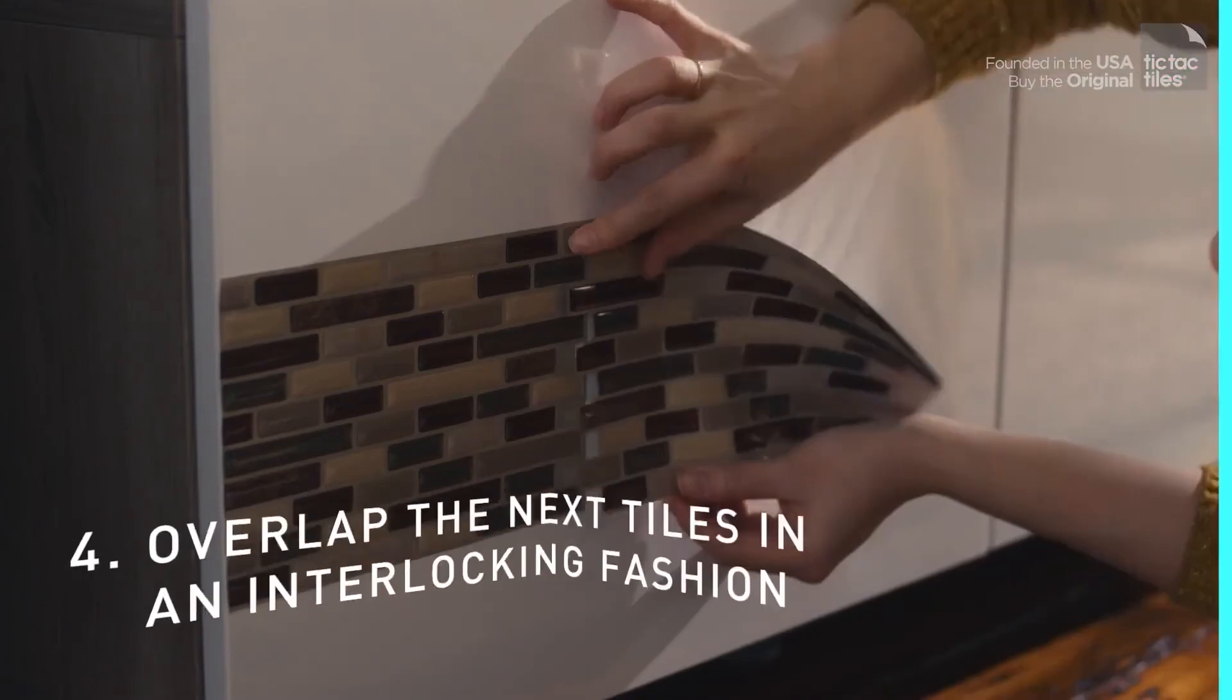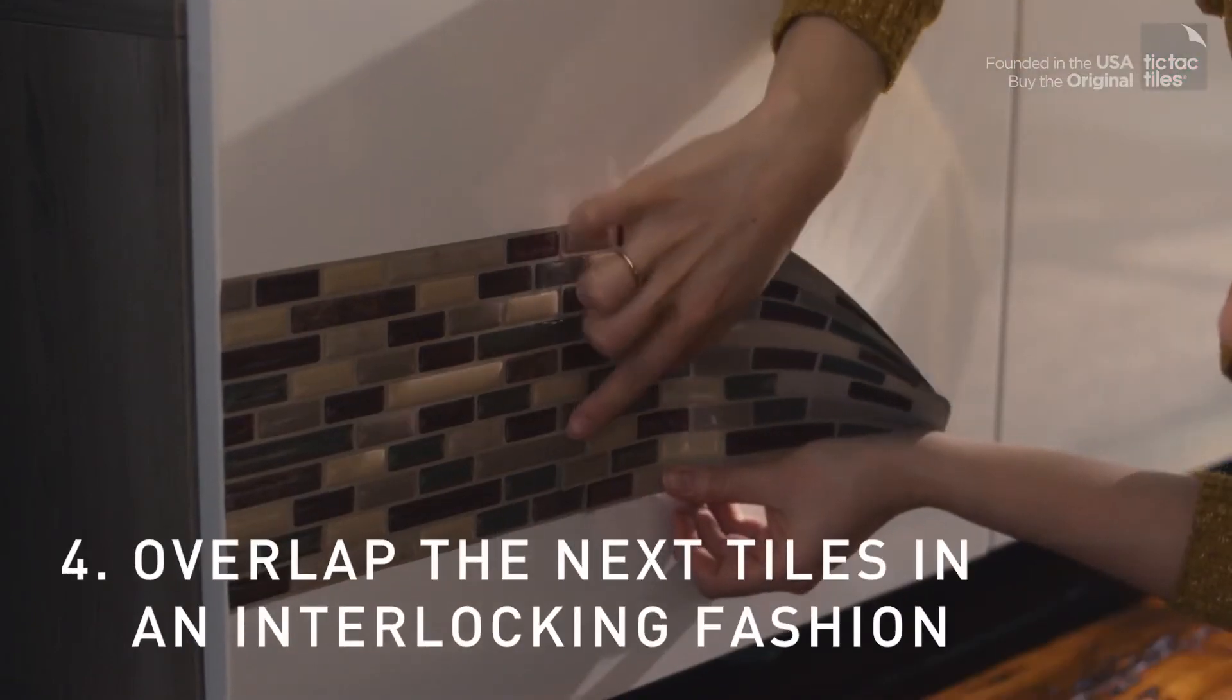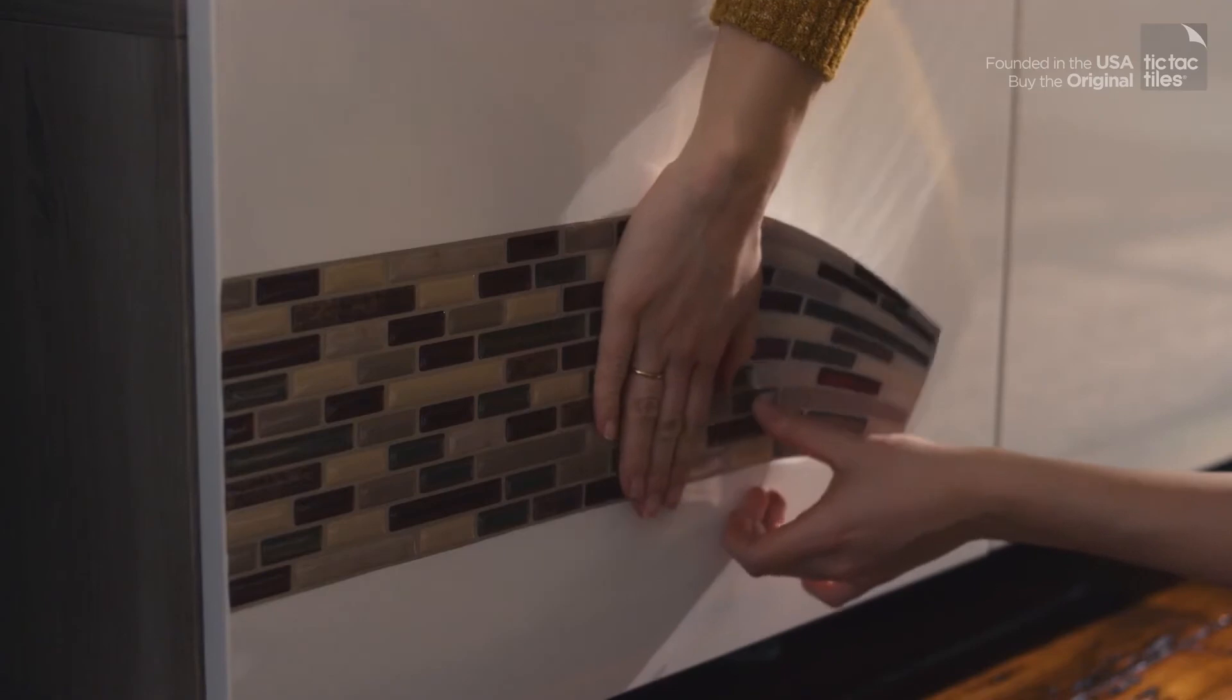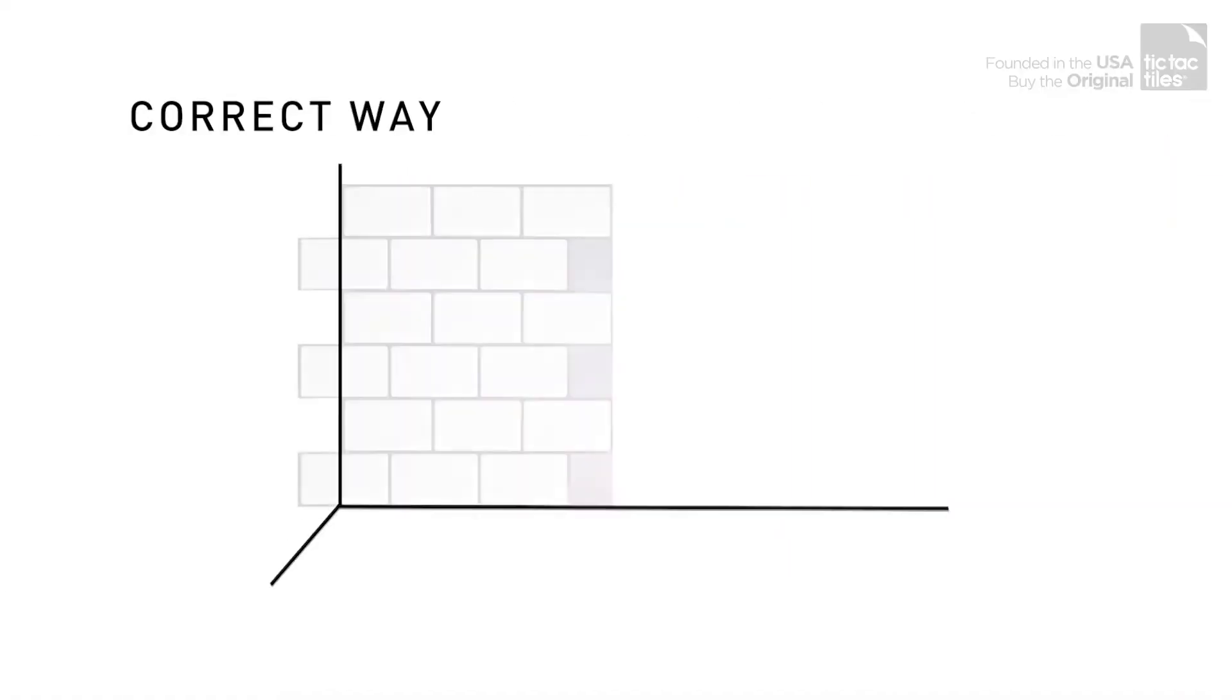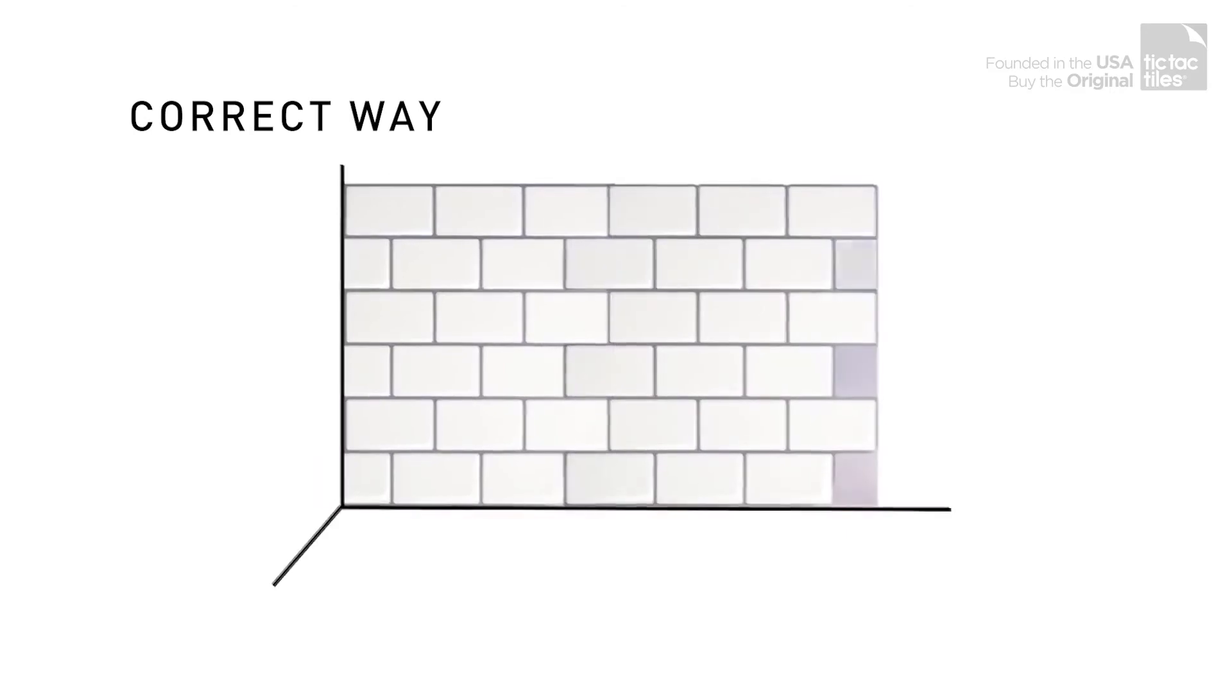Slap the next tile in an interlocking fashion, where it says overlap here, and firmly press the grout line. Don't start with the straight edge of the tile. Finish the jagged edge with the remaining tile piece from the first tile.